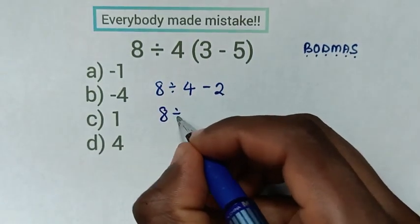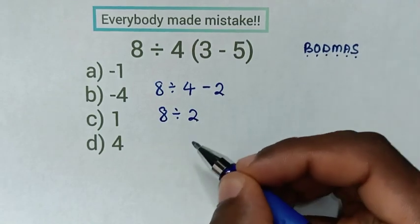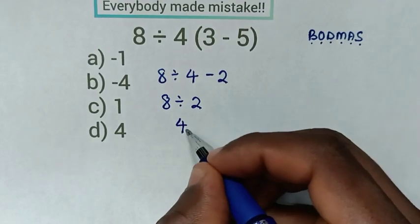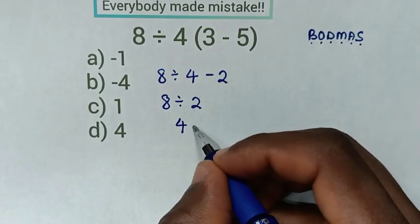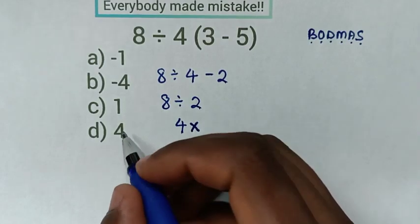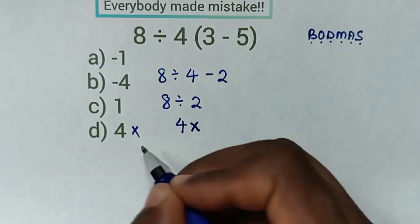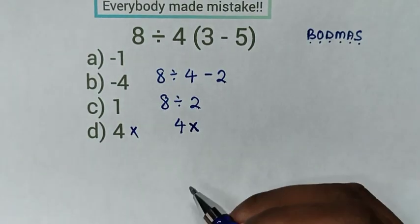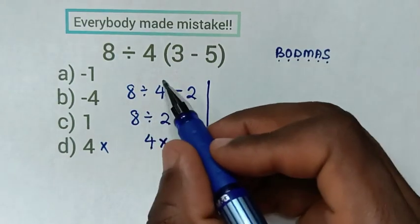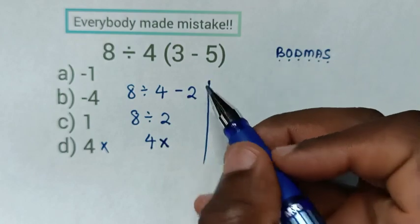So here it will be 8 divided by 4 minus 2. 4 minus 2 is 2, then 8 divided by 2 is 4. This answer of 4 is wrong — this is a mistake. If you select D, that is incorrect.